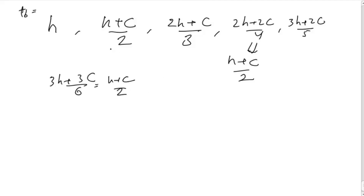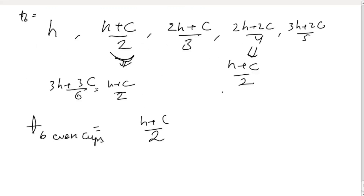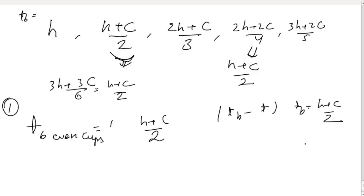You can see that for all even turns the temperature of the barrel is (H+C)/2. So T_barrel for even cups equals (H+C)/2. If the minimum difference occurs when T_barrel equals (H+C)/2, then the cups required will be 2. This is our first case.